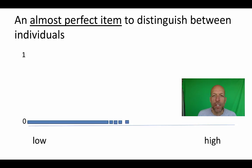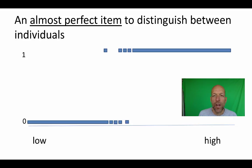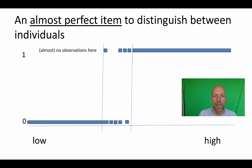Suppose we want to measure the level of knowledge and we have some item. We pose the question: people with a low latent trait will answer the question incorrectly, while children with a high level of that latent trait will answer it correctly. In the middle range we find both correct and incorrect answers from children with the same latent trait. At the extremes, however, there are almost no observations. This is what makes the item almost perfect.